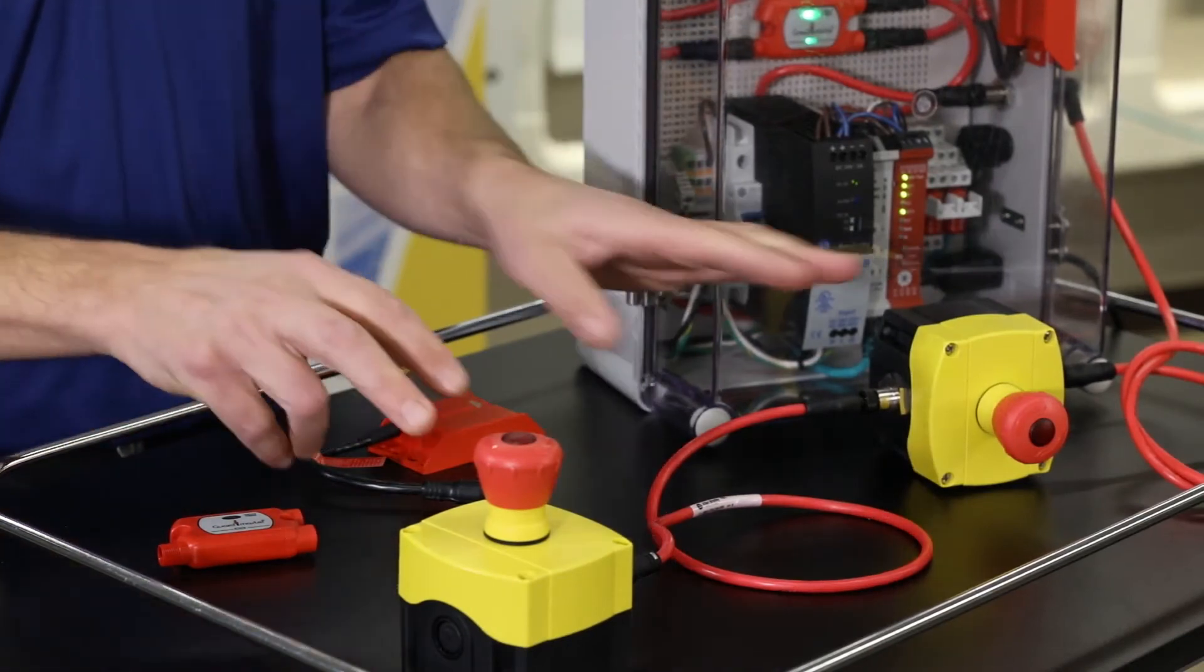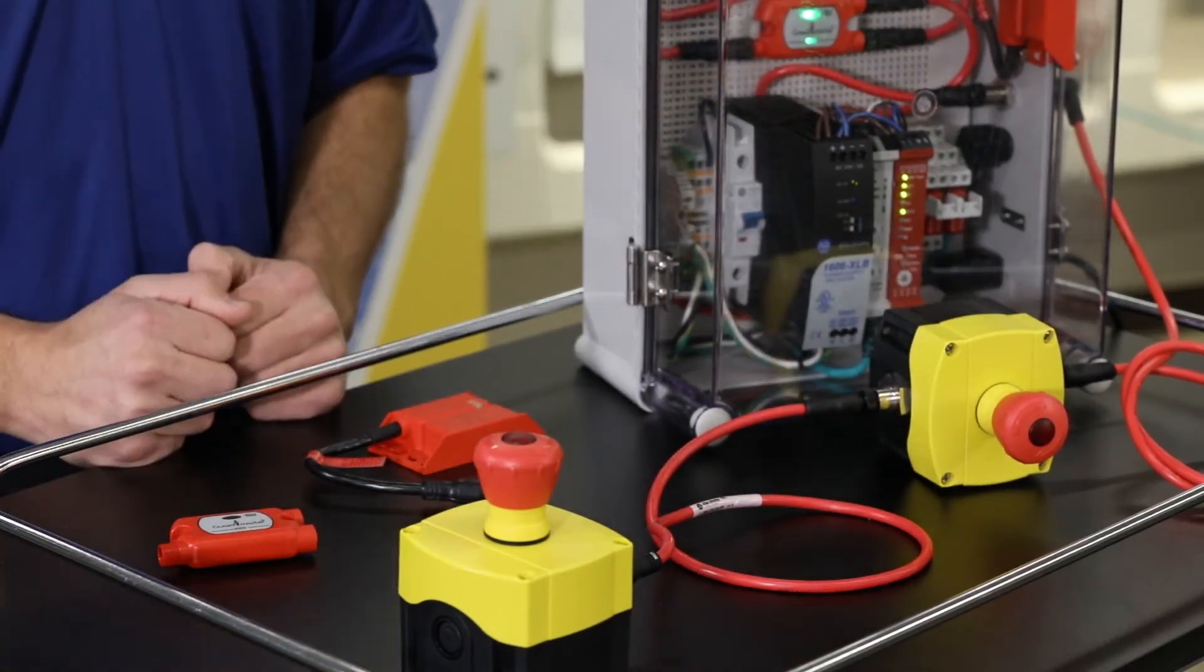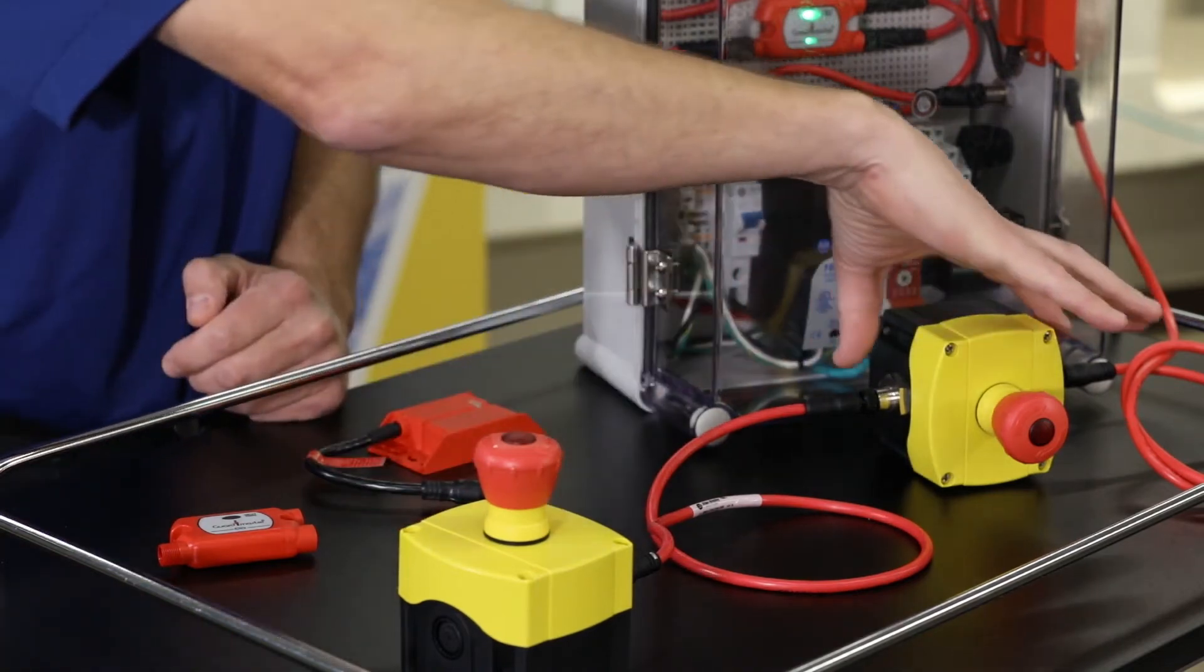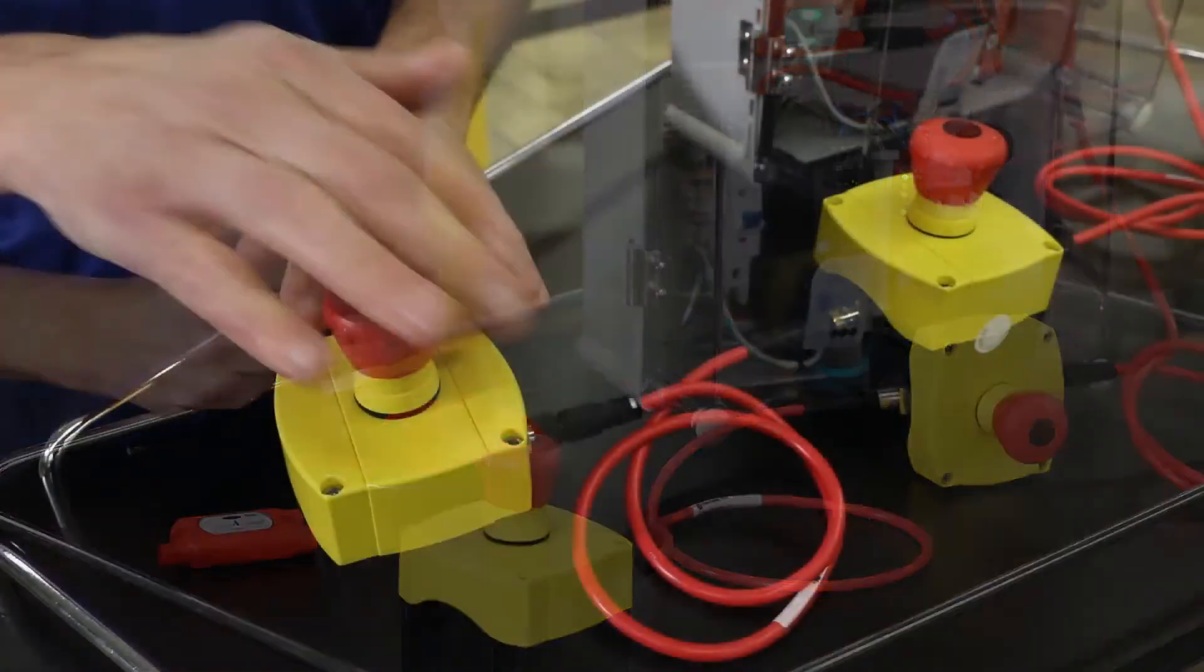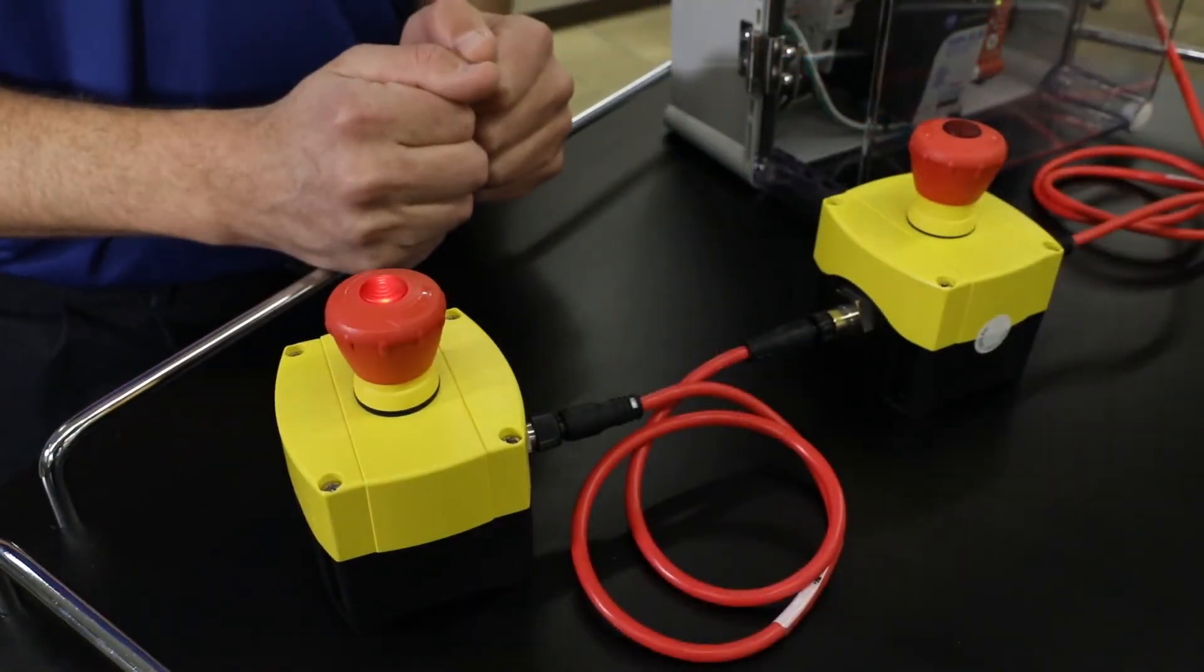Here I have a guard link demo with two 800F enclosed e-stops connected in series. One e-stop is a single port and the other is a dual port. As you can see when an e-stop is activated the LED is illuminated for ease and speed of identification.